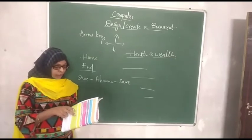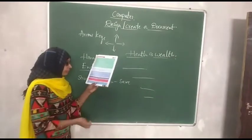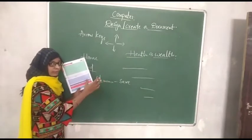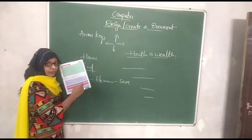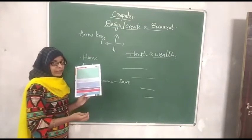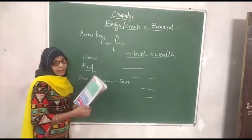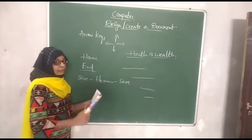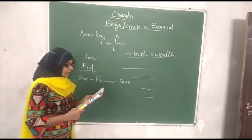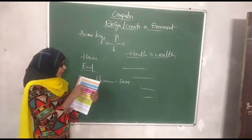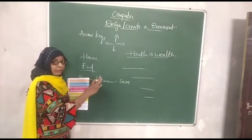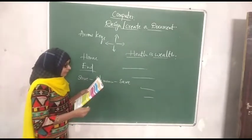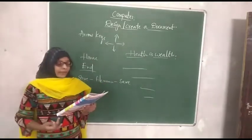If you select Right Alignment, the lines in your paragraph will become closer to the right margin. If you want Center Alignment, the lines of your paragraph will be assembled in the center. Then Justified Alignment means all the lines in the paragraph will be equally expanded — not towards left, not towards right — they will be equally expanded to both the left and right margins.